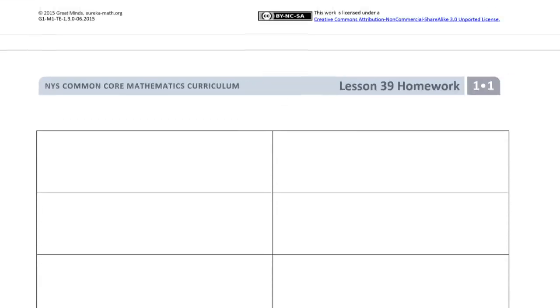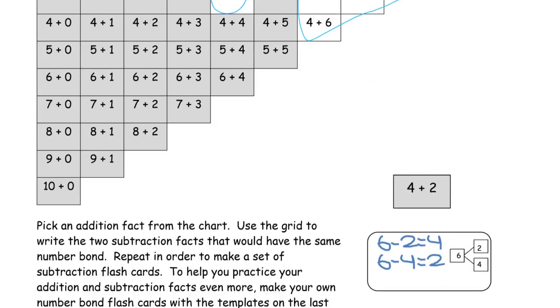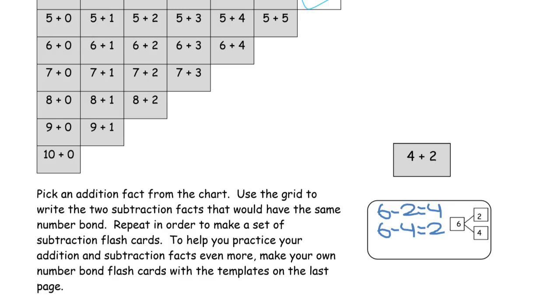So each one of these is going to have two subtraction sentences because there's no doubles here. And that's why it's going to take a whole page to write them out. Now let's see what it says here. Pick an addition fact from the chart, use the grid to write the two subtraction facts that would have the same number bond. So it might help to make the number bond first for these.